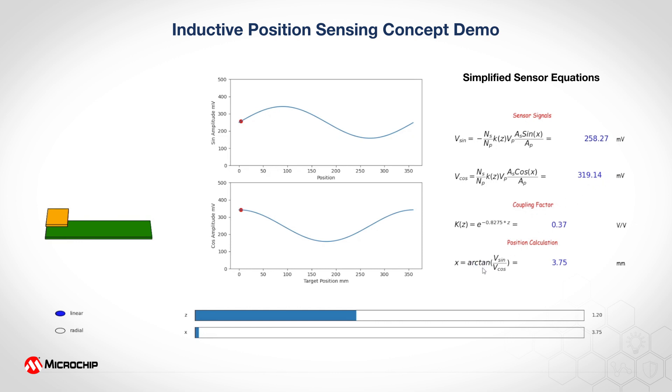As we mentioned, the coupling factor is modeled after a regression model that we found using the data that we collected by using exponential regression. We found this regression constant and we're modeling it so that the z which represents the air gap, the z-axis between the metal target and the PCB, affects the result of the coupling factor.